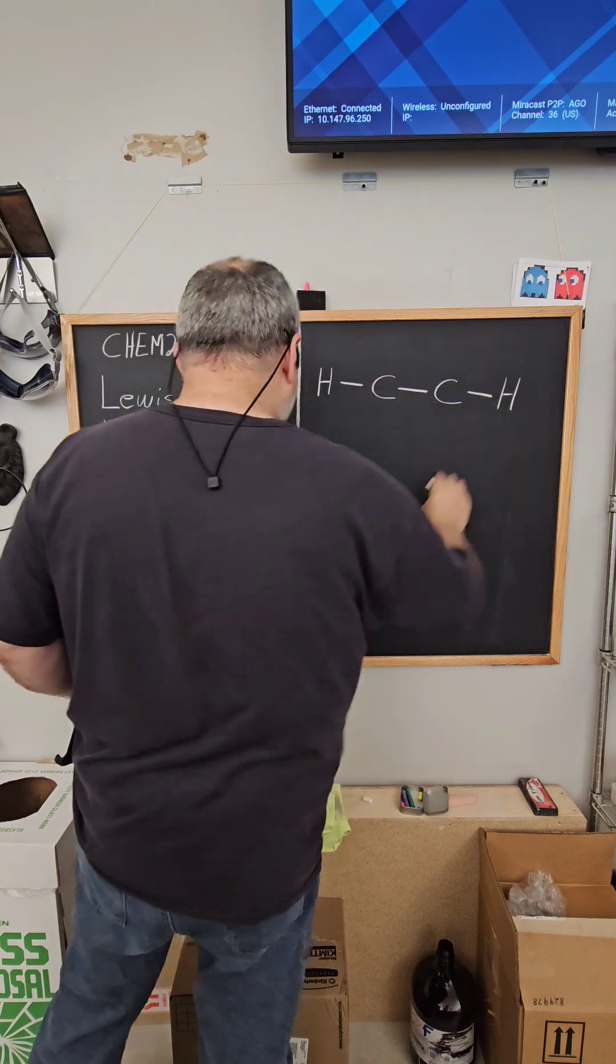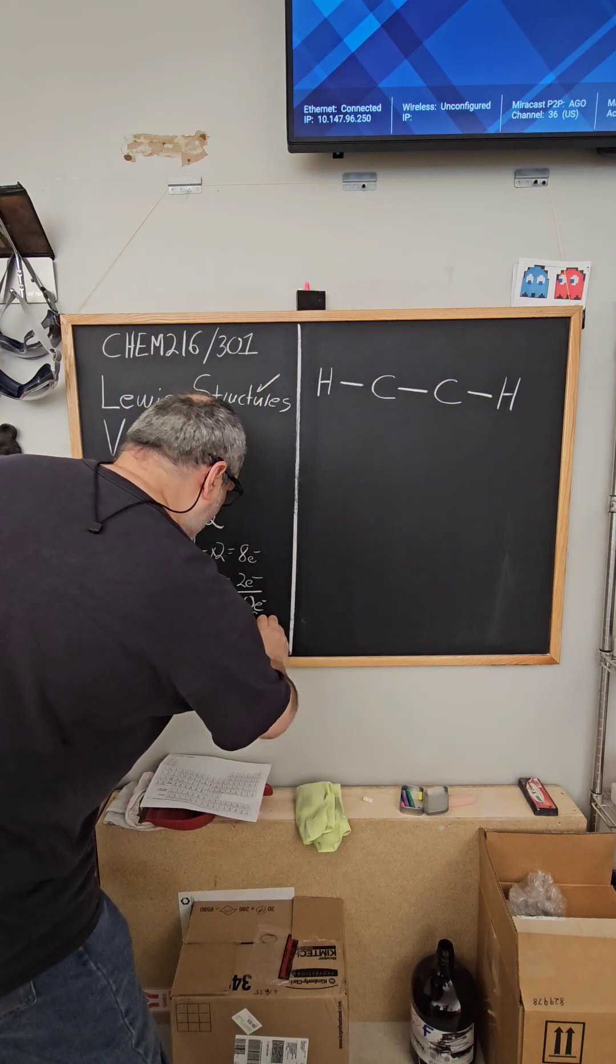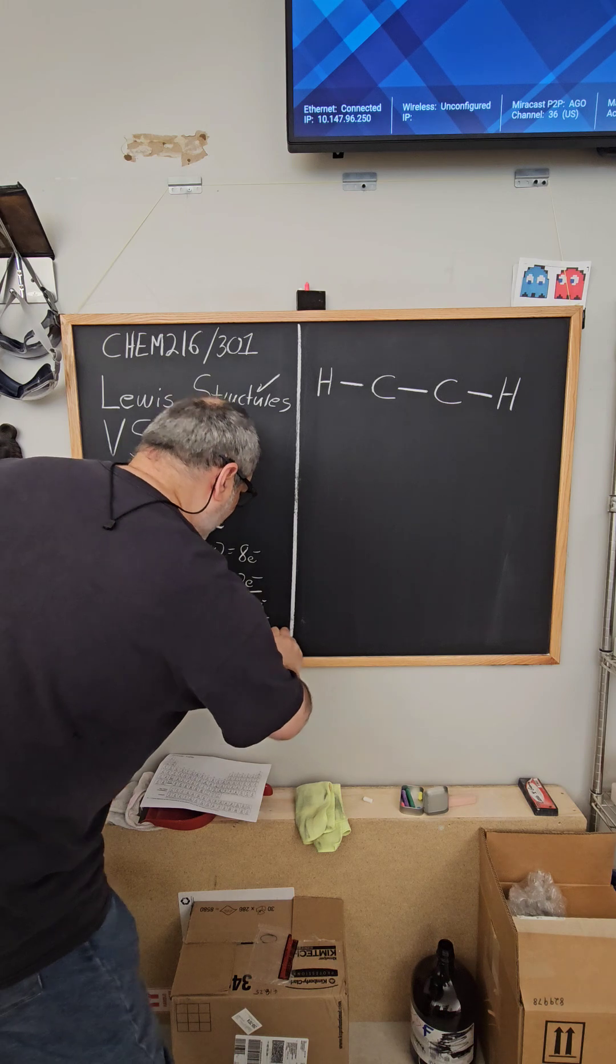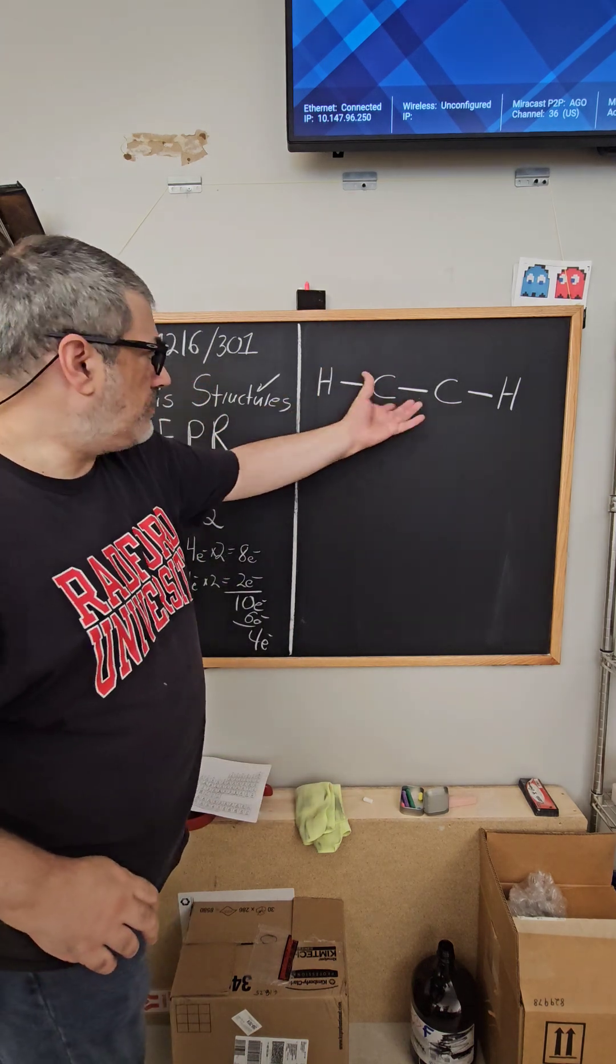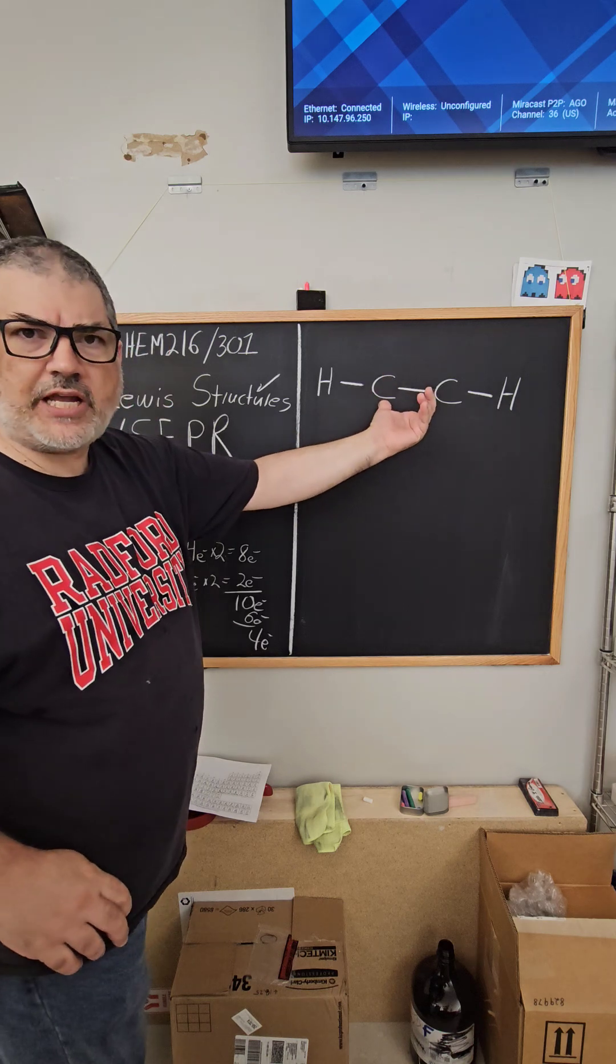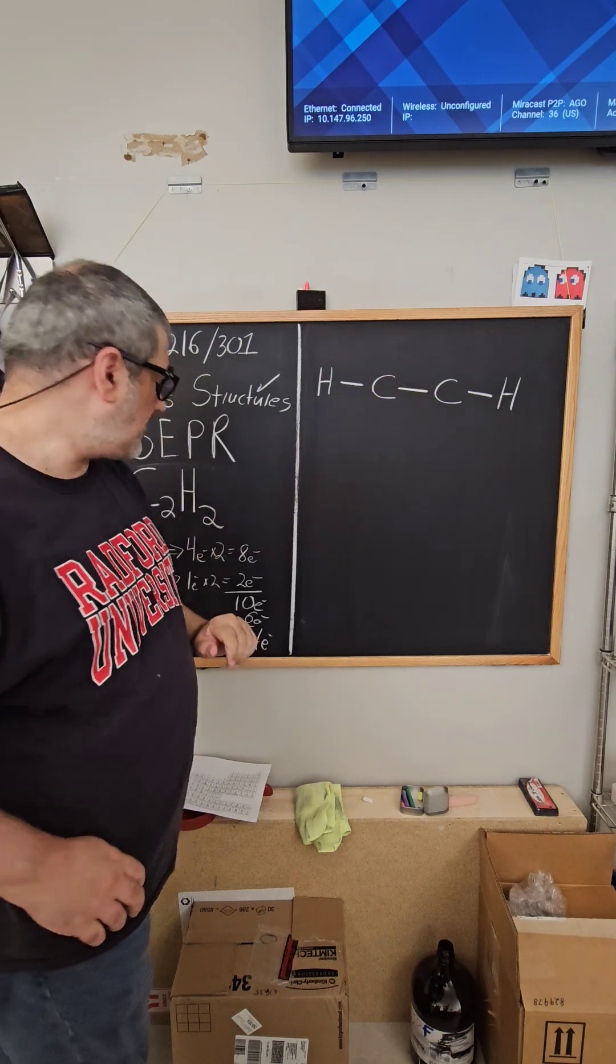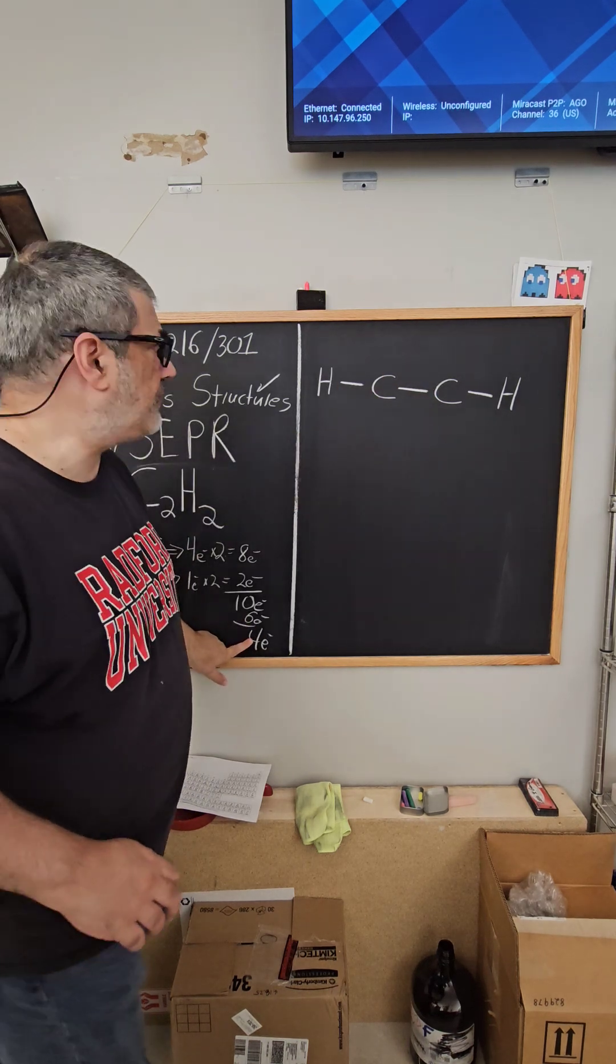Now we put the electrons in. Two, four, six. So I've used six electrons. I have four left over. We need a covalent bond between each set of adjacent atoms. So that's how I can justify that. But I've got four electrons left over.